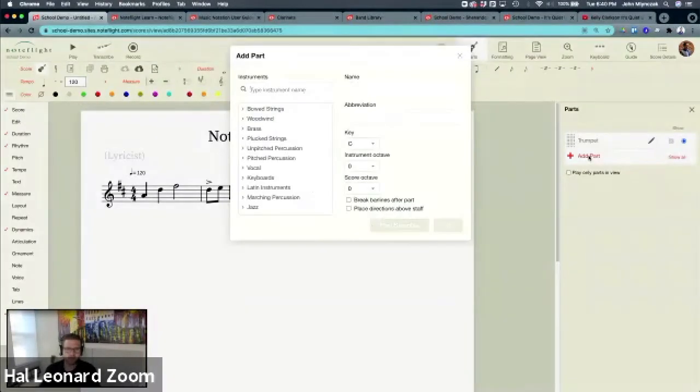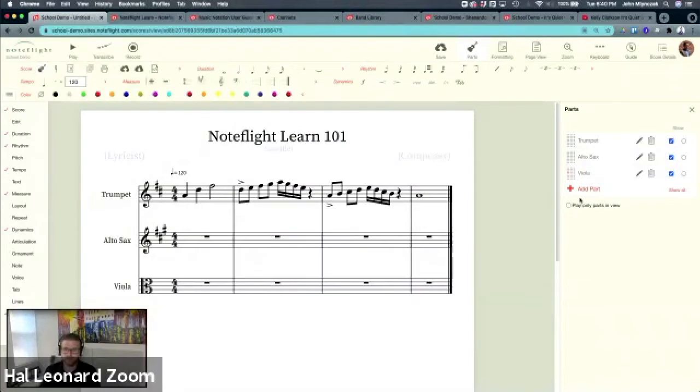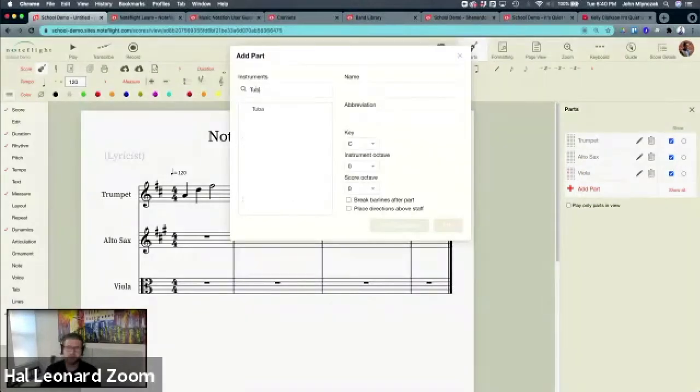Now, if I want to add a part, I can add another part. So let's add an alto sax. Let's make this really fun. Let's add a viola. Let's show other clefs. Let's add a tuba. I'm just searching. By the way, I'm going quickly here. You have categories. So if you want to search through the different instrument sounds, you can. But you can just search and find what you're looking for. They're all categorized up here.